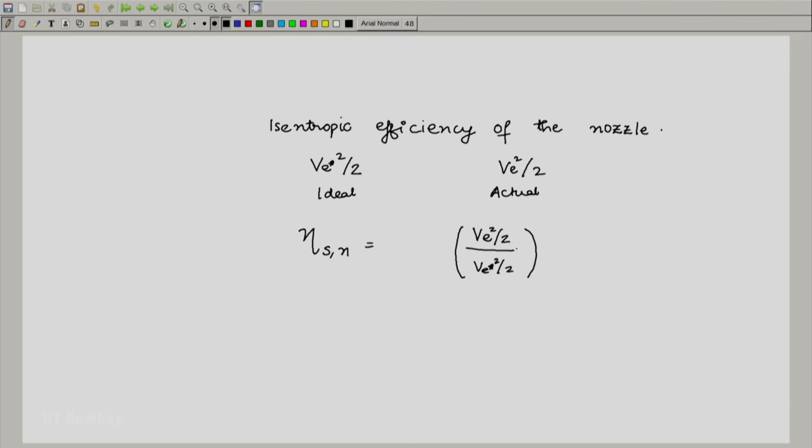And this number, as you can see, because v_e*²/2 is greater than or equal to the actual v_e²/2, this number will be less than or equal to 1 as expected and this is what we call as the isentropic efficiency of the nozzle.